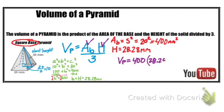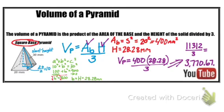If I substitute in 400 and 28.28, simplify the numerator, I'm going to get 11,312 over 3, which ends up being 3,770.67 millimeters cubed.